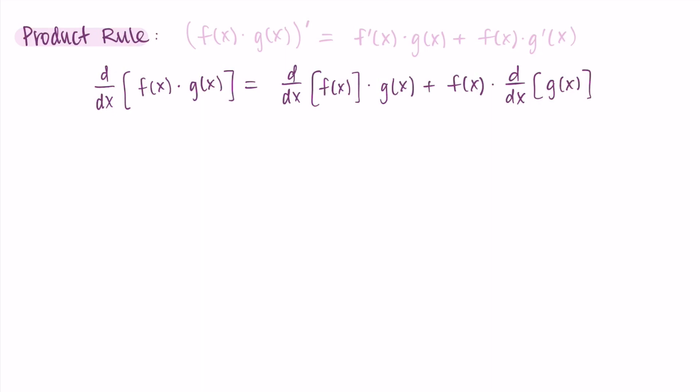Before we hop into doing an example, something I like to do is write this using a little bit less notation. Both of these ways of writing it are really long, so I sometimes just take out the 'of x.' Instead I write: (f times g) prime equals f prime times g plus f times g prime. This is just a shorter way to write the product rule, and I'll be keeping this with us as we do the examples in this video.